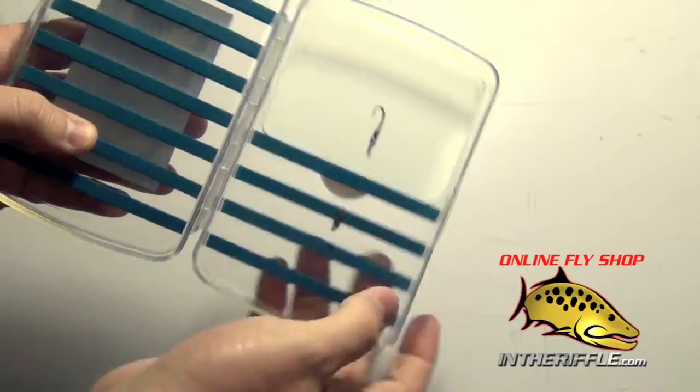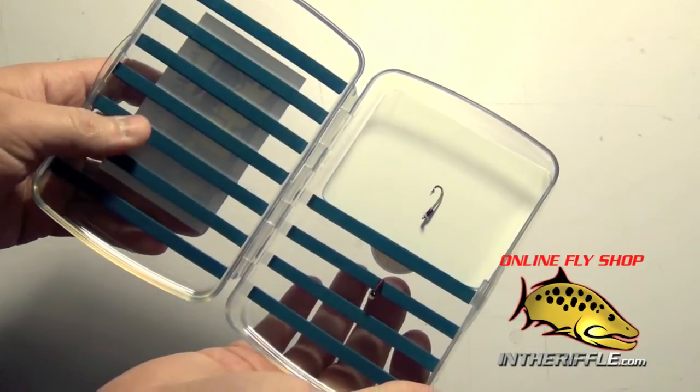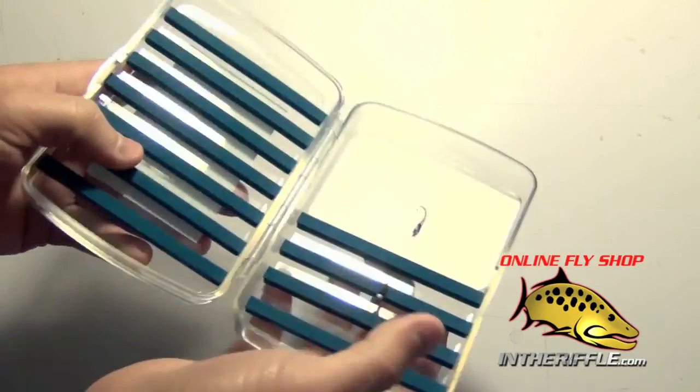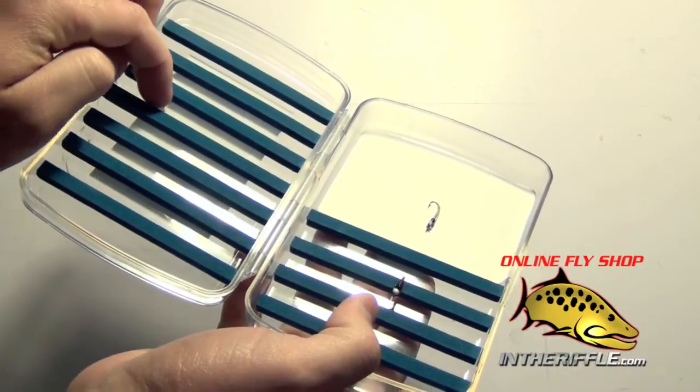The foam strips will accommodate a wide range of flies - everything from midges to nymphs to dry flies. The foam sits nice and high, so your dry flies' hackle can sit right in the ridge and won't get smashed.